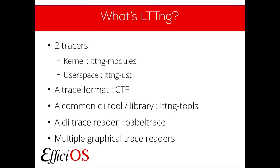So what's LTTNG? It's a suite of tracing tools. We have two tracers: one kernel-based, which is kernel modules you insert in a Linux kernel, and the other one is a user space tracer, which is a set of libraries you link into your project and then add trace points. A tracer can be described as a fast, non-blocking, structured binary logging framework — basically logging, but faster and more flexible.